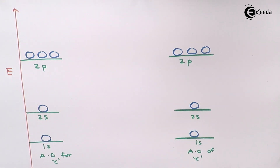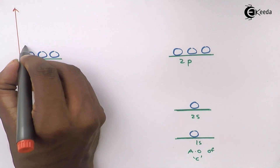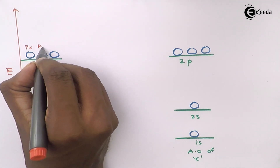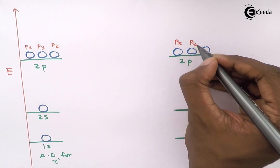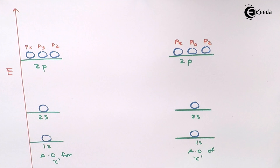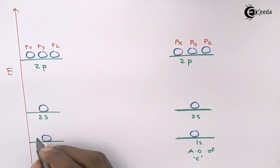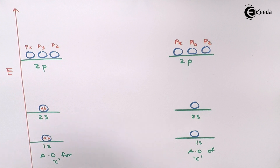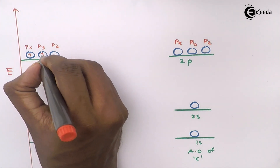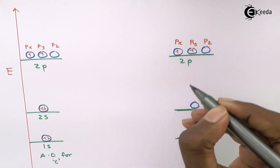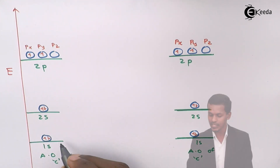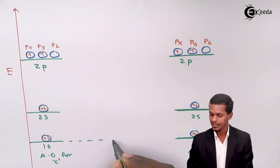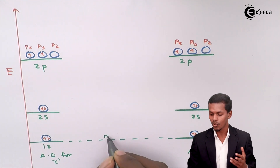Let us designate the orbitals. The 2p orbitals are designated as 2px, 2py, and 2pz for each carbon atom. Filling the electrons: each 1s has 2 electrons, each 2s has 2 electrons, and each 2p has 2 electrons. Now, 1s is not responsible for forming bonds, so it is known as a non-bonding orbital.